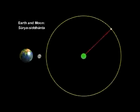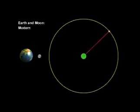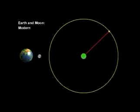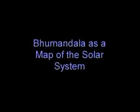Although the Bhagavatam presents the Earth-Moon system indirectly as a planisphere model, the Indian astronomical texts called Jyotish Shastras directly give a realistic picture of the Earth-Moon relationship. Here we compare the Earth, the moon, and the lunar orbit in modern astronomy with their counterparts in the Surya Siddhanta, one of the main Jyotish Shastras. Bhumandala as a map of the solar system: we have shown that Bhumandala and the orbits of the sun, moon, and planets have the structure of an astrolabe based on a stereographic projection of the Earth globe.